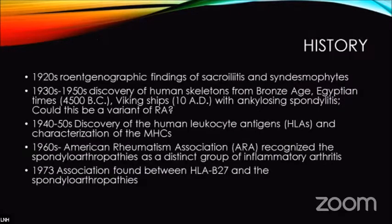In 1898 Marie described the entity as separate from all other types of arthritis involving the spine. As history progressed, in the 1920s x-rays were invented and findings of sacroiliitis and syndesmophytes were seen. In the 1930s to 1940s there were discoveries in Egypt and Viking ships showing skeletons with ankylosing spondylitis. In the 1950s the discovery of human leukocyte antigen advanced our knowledge, and in the 1960s the American Rheumatism Association recognized spondylopathies as a distinct group of inflammatory arthritis. In 1973, the association found the link between HLA-B27 and spondyloarthropathies.